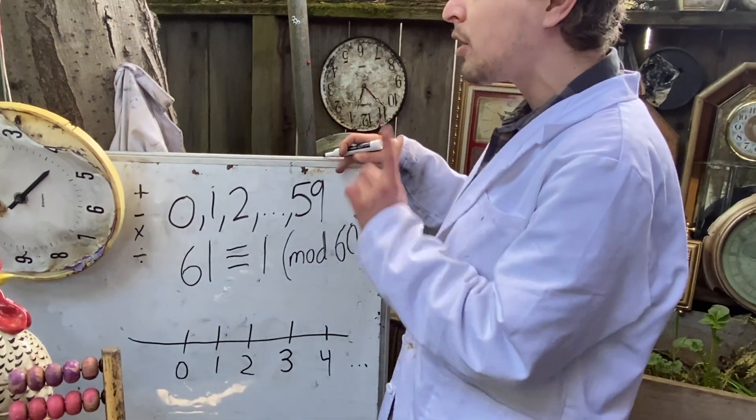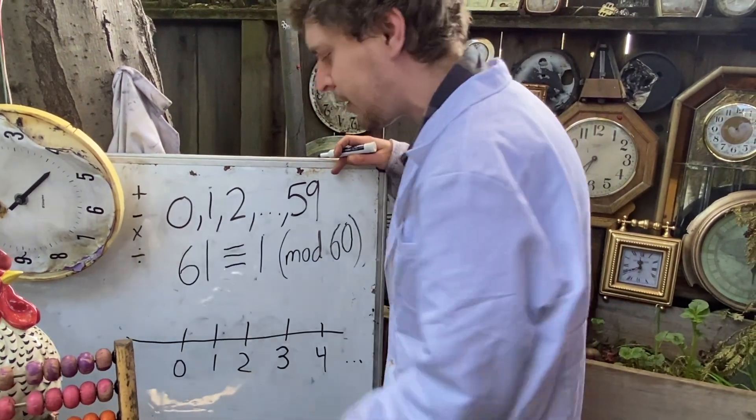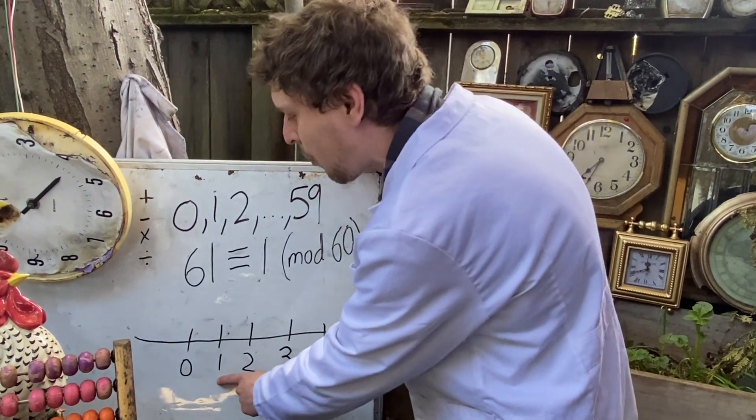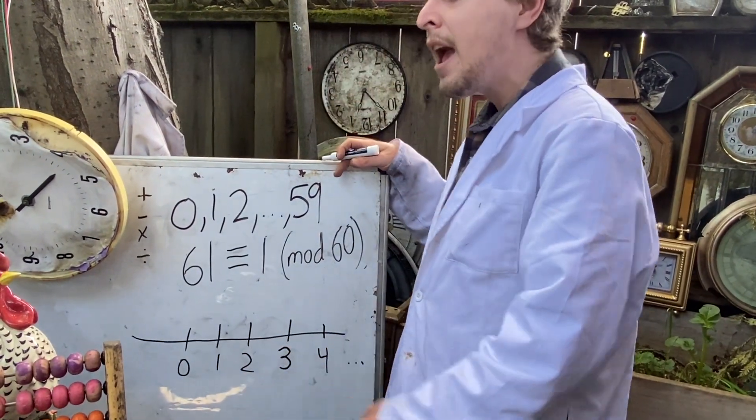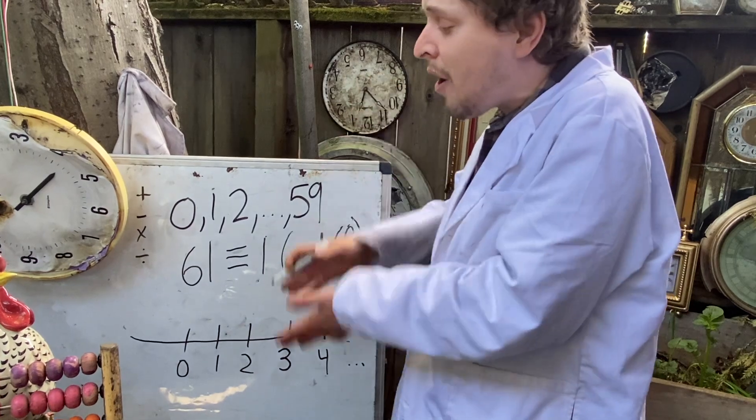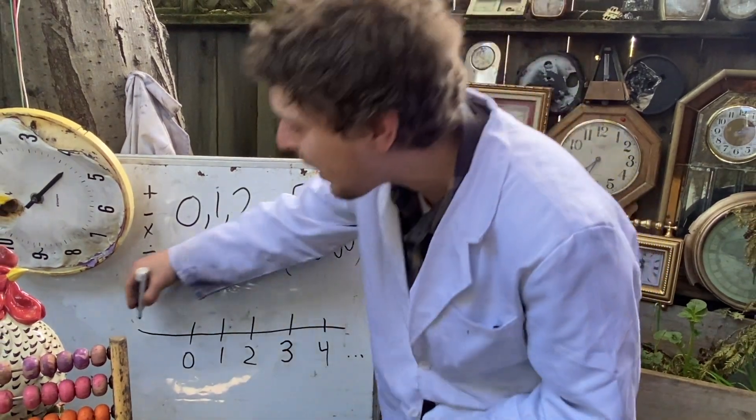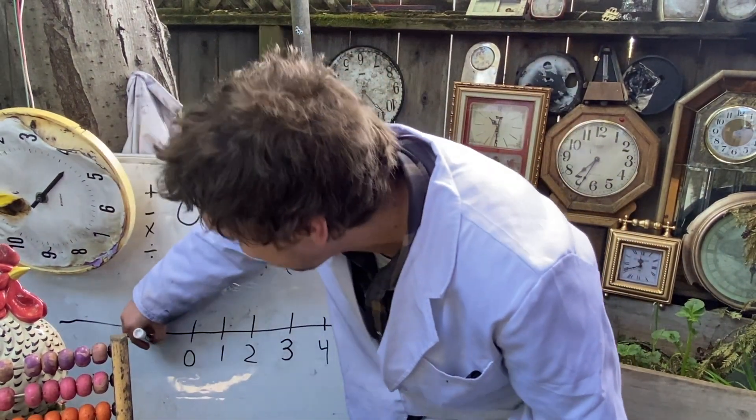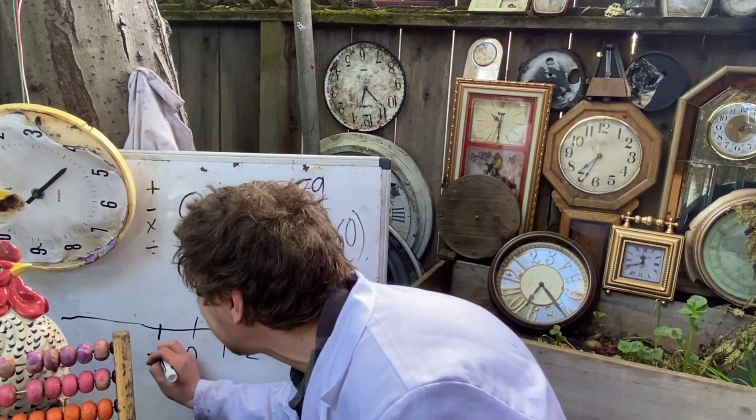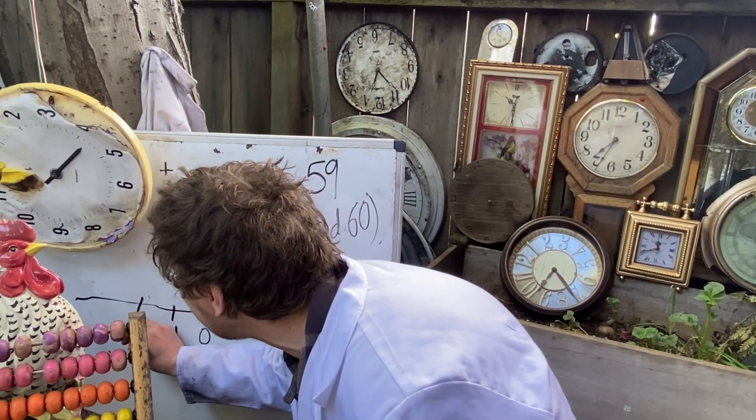But they're not closed under subtraction because I could do something like 1 minus 3 and get a result that's not a non-negative integer. I would have to extend this a bit, include the negative ones, and talk about all of the integers.